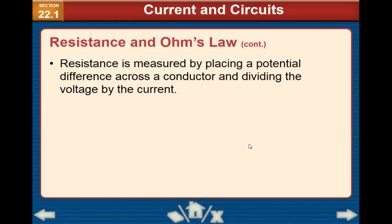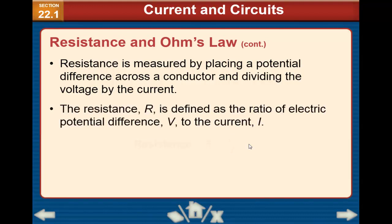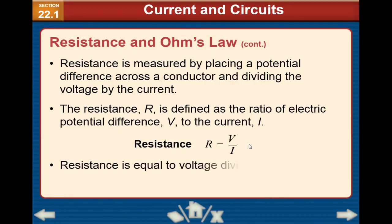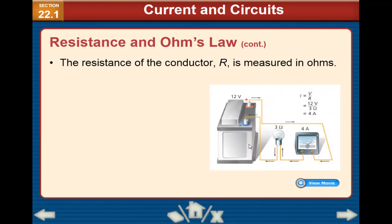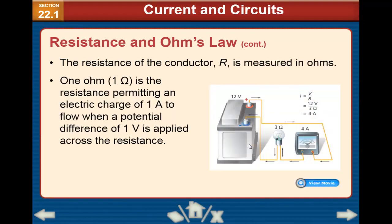Resistance is measured by placing a potential difference across a conductor and dividing the voltage by the current. The resistance R is defined as the ratio of the electric potential difference to the current I, so R equals V divided by I. This is Ohm's Law. Resistance is measured in ohms. One ohm is the resistance permitting an electric current of one ampere to flow when a potential difference of one volt is applied.